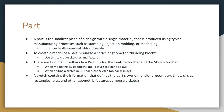To create a model of a part, we use many different geometric blocks like spheres, cubes, and other things. The main two toolbars of Part Studio are the Feature Toolbar and the Sketch Toolbar. Last week we worked on the Sketch Toolbar and sketched the design of a smiley face. When we want to modify 3D geometry, we use the Feature Toolbar. When we want to edit a sketch in 2D space, we use the Sketch Toolbar, which has tools like lines, circles, rectangles, and other sketching tools.